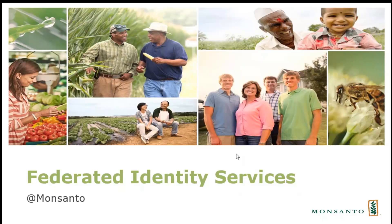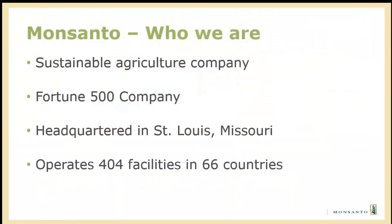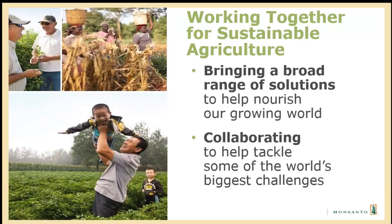Just to kick things off, a quick background on Monsanto — who we are. We're a large sustainable agricultural company, Fortune 500, headquartered in the Midwest in St. Louis, Missouri, and we operate about 400 facilities in 60 or so countries around the world. Part of our mission is working together for sustainable agriculture — bringing solutions to help nourish a growing world through seeds and fertilizer, fruits, vegetables, key crops such as corn, soybeans, and cotton that help farmers have better harvests whilst using minimal resources.